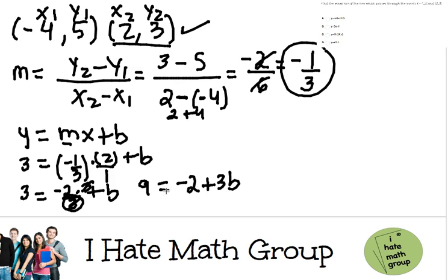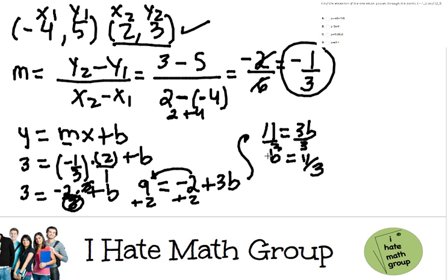So now I have an easier linear function, so I just move the 2 here by adding to both sides, and I get 11 equals 3b. Finally, b equals—I divide by 3 on both sides—and this is 11 over 3. Awesome!